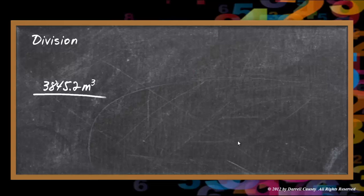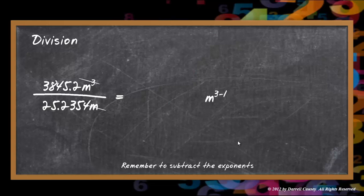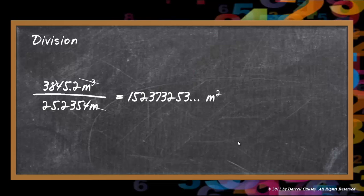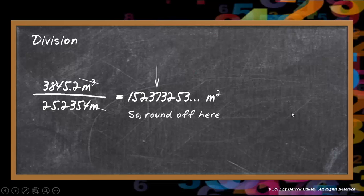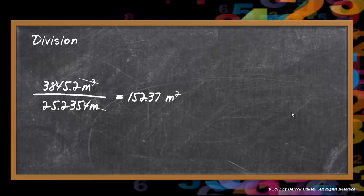Division — let's do a division problem. Make sure we cancel out units. Three minus one — we've got to watch the exponents and make sure we do our units as well. I didn't finish it out here because it's a very long number, but I can see that I have one, two, three, four, five sig figs. So the fewest sig figs is five, and I'm going to count out five digits and round off right there. Our answer is 152.37 meters squared.